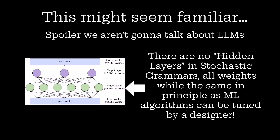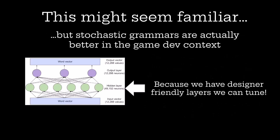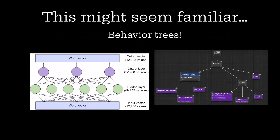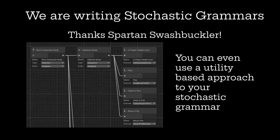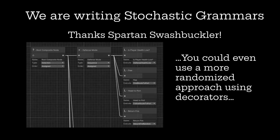This might seem familiar, but we aren't going to talk about large language models. The advantage of these grammars in a game development context is that they are all designer-friendly layers — things that designers can actually tune themselves with an understandable output. It might also seem familiar to behavior trees, and yes, behavior trees are considered to be a stochastic grammar, even utility-based ones. Utility-based approaches are just one way to use a stochastic grammar, and a deterministic one is another. The more typical way using distributions is essentially adding a decorator to every single choice and weighting those — not randomly, but based on a distribution determined by variables in the game.